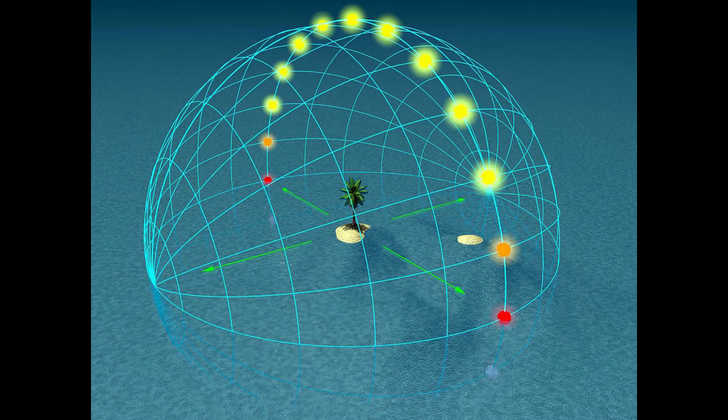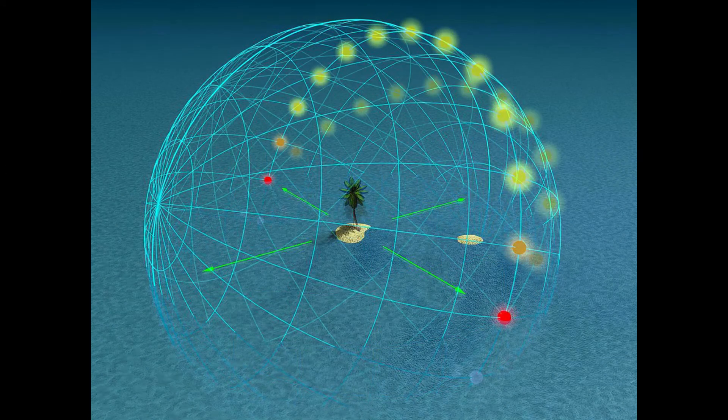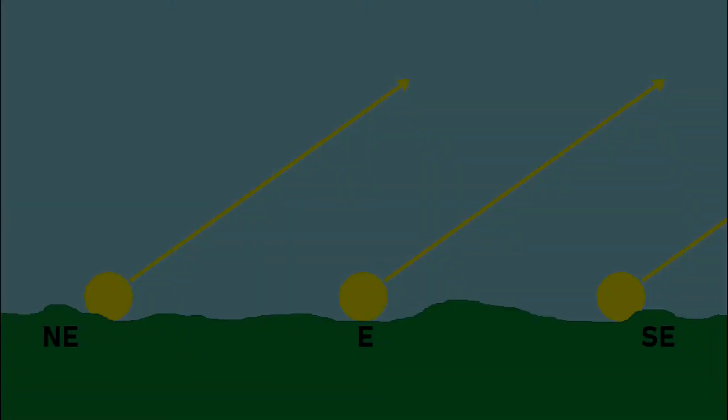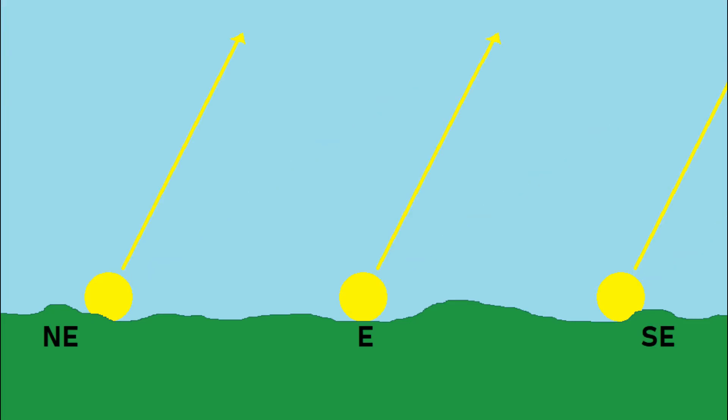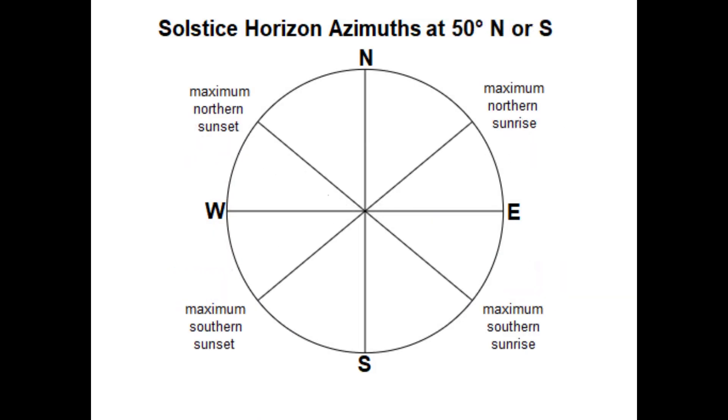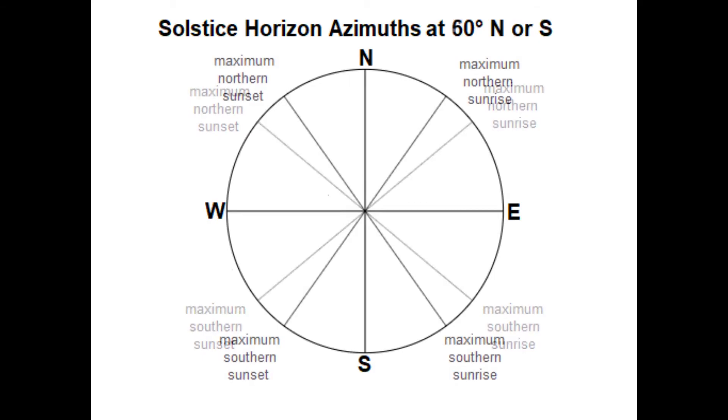The sun rises at sharper angles relative to the horizon the further north or south a location is positioned on the earth. In the northern hemisphere, the sun angles to the south, and in the southern hemisphere, it angles to the north. The change in sunrise and sunset positions on the horizon become much more extreme.